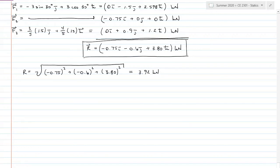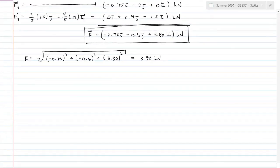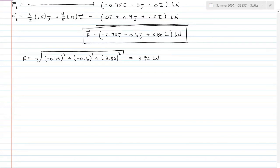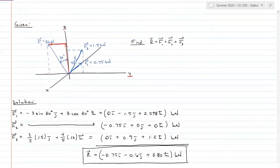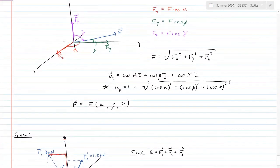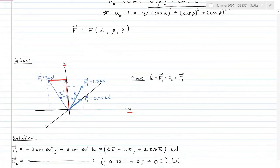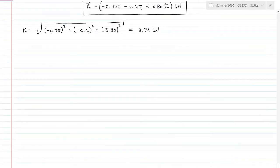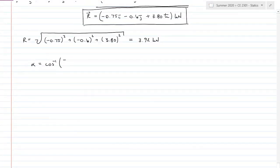Then I need to find the direction, and I have to do three separate directions. Rearranging my equations from earlier, alpha equals the inverse cosine of my x direction, negative 0.75 over the magnitude 3.92 kilonewtons.